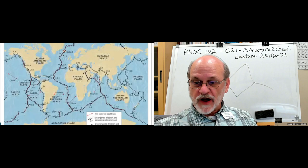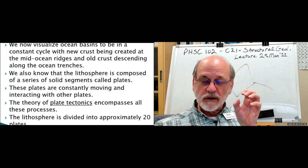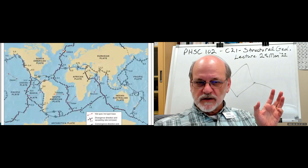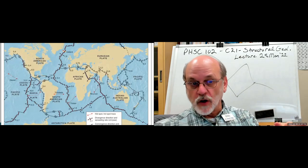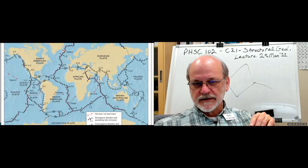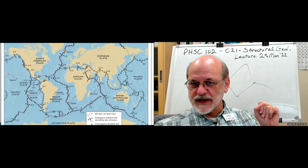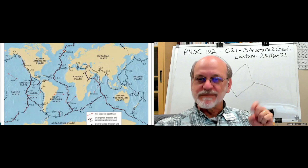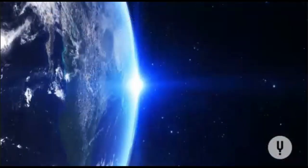We've identified approximately 20 plates — some very small, some very large. The major ones include the South American plate, North American plate, the Pacific plate which is entirely covered by ocean, minor plates like the Cocos and Nazca, the Antarctic plate, the Indo-Australian plate — India and Australia on the same plate — and the Eurasian plate.